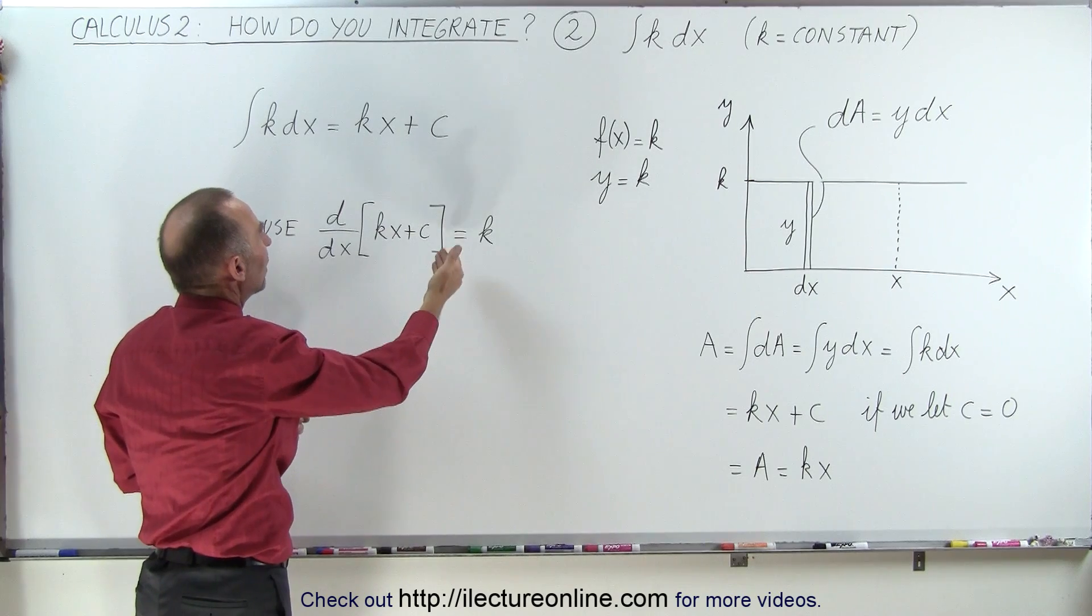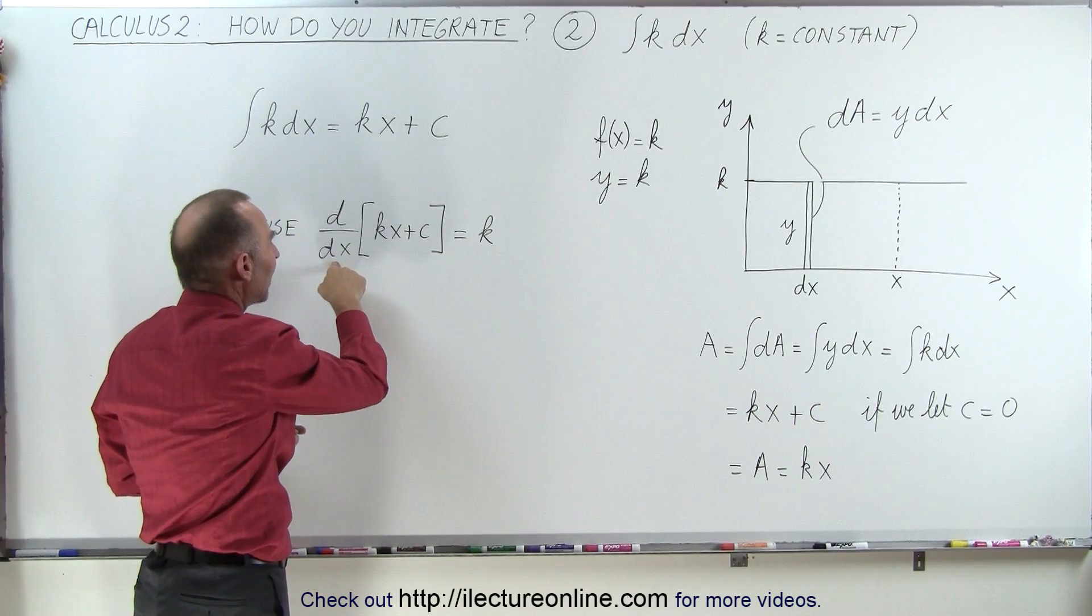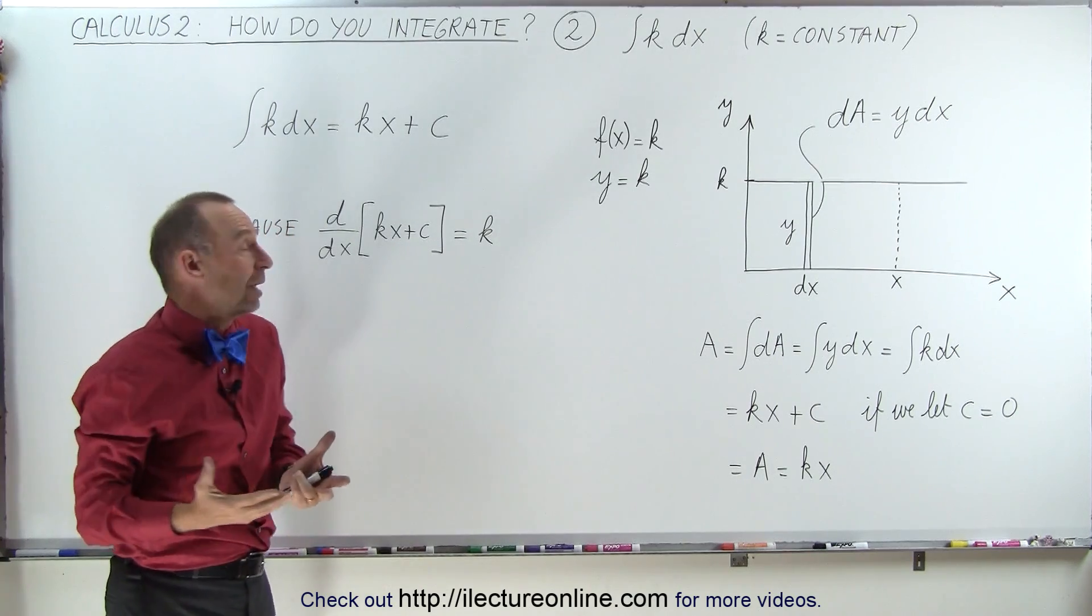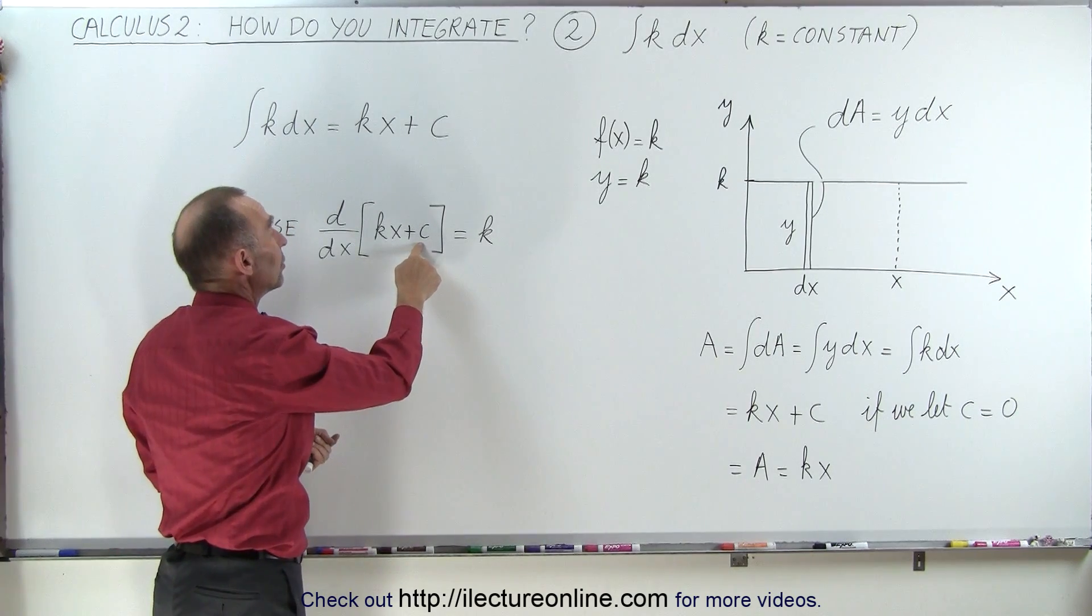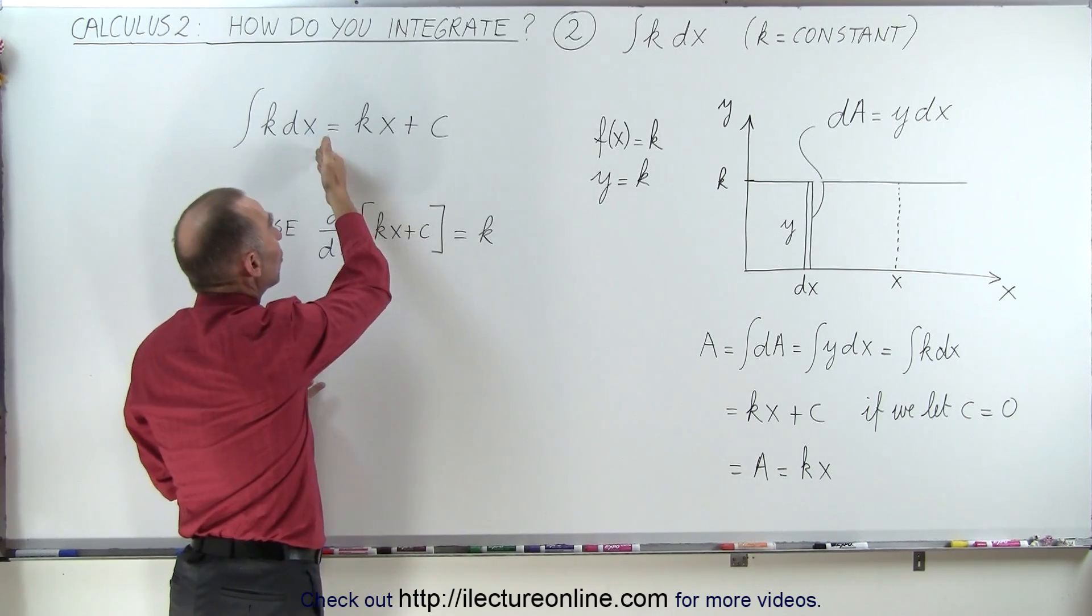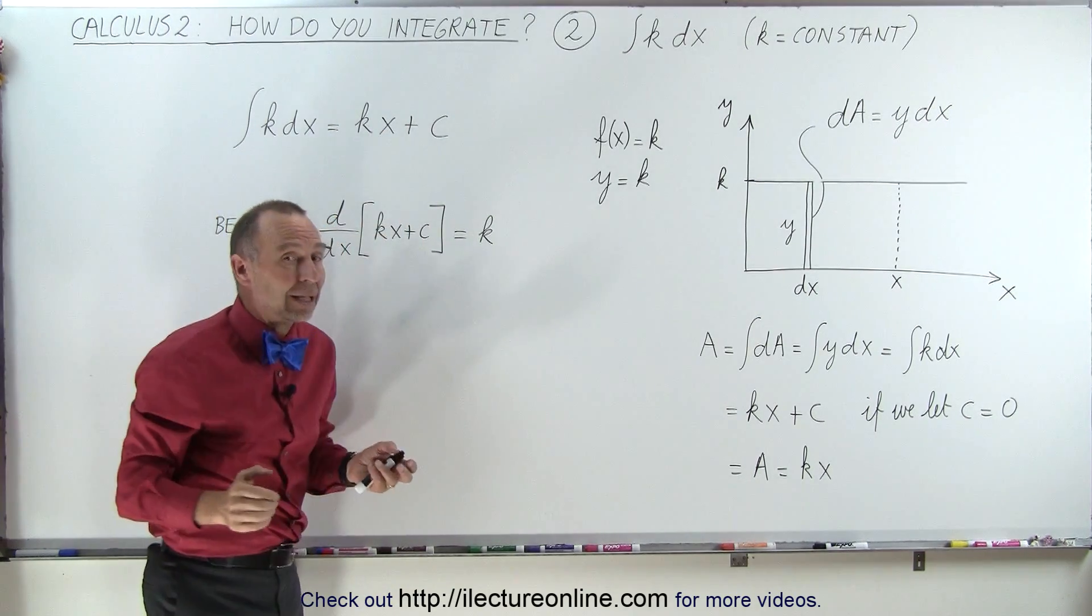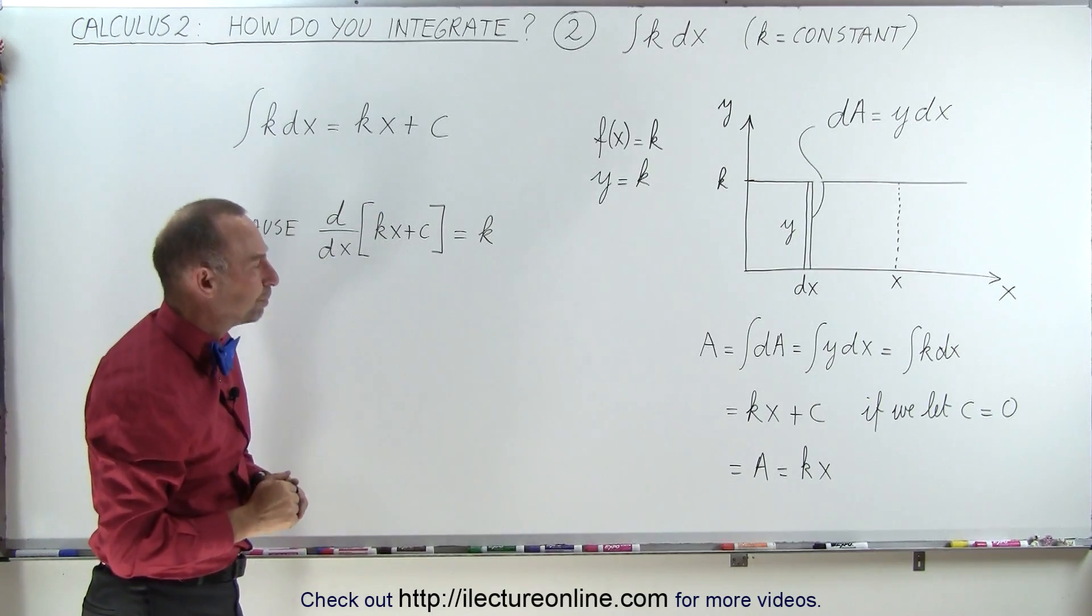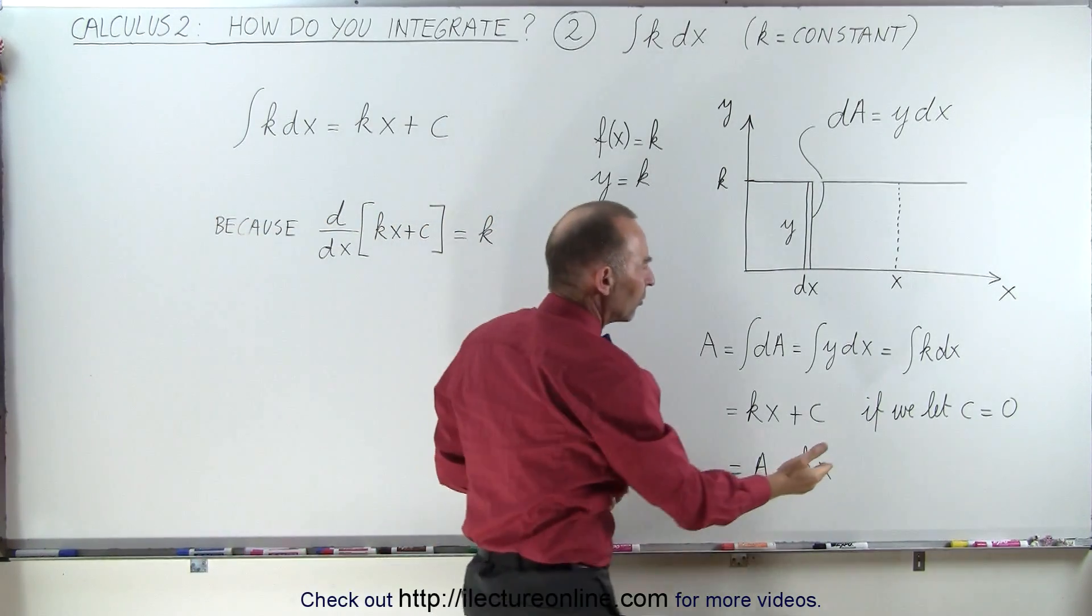The reason why we add that is because if that was part of our original function to begin with, and then we take the derivative of that, the constant disappears. So it's something that we didn't know if we had or not, because that c could be any value. So when we take the derivative, it goes to zero. But when we integrate, we should get that constant back. Since we don't know what it is, we just call it an added constant.